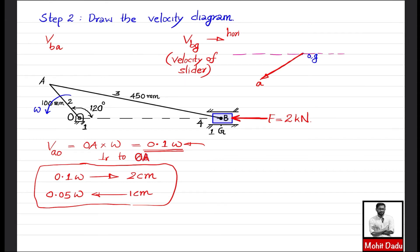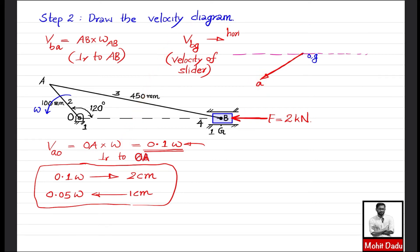The vector V_BA is perpendicular to link AB. Transferring this direction to point 'a' on the velocity diagram, we draw a line perpendicular to AB from point 'a'. The intersection of this line with the horizontal V_BG direction gives point 'b', completing the velocity diagram. The vector from the zero-velocity point to 'b' represents V_BG (slider velocity), and the vector from 'a' to 'b' represents V_BA.